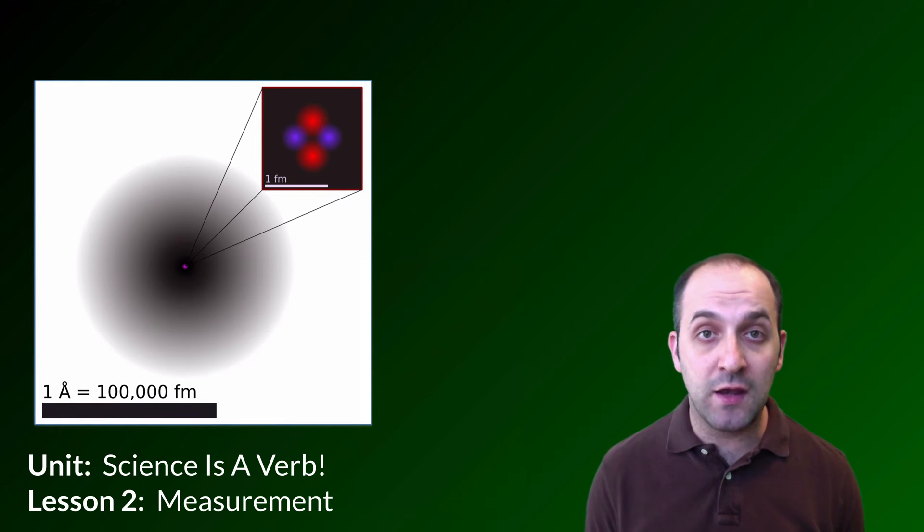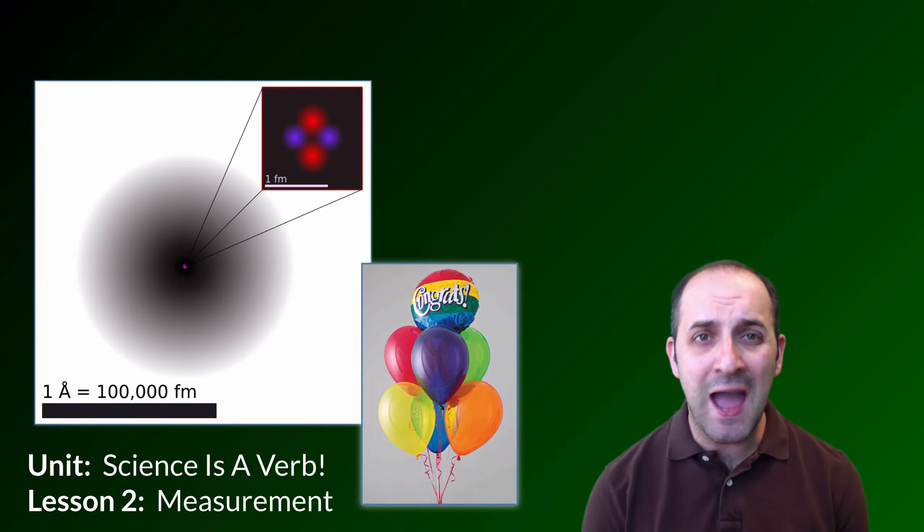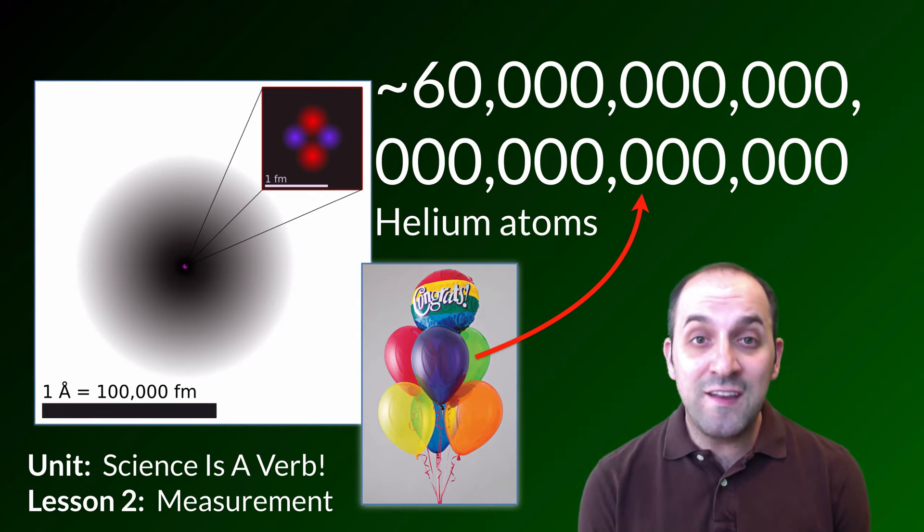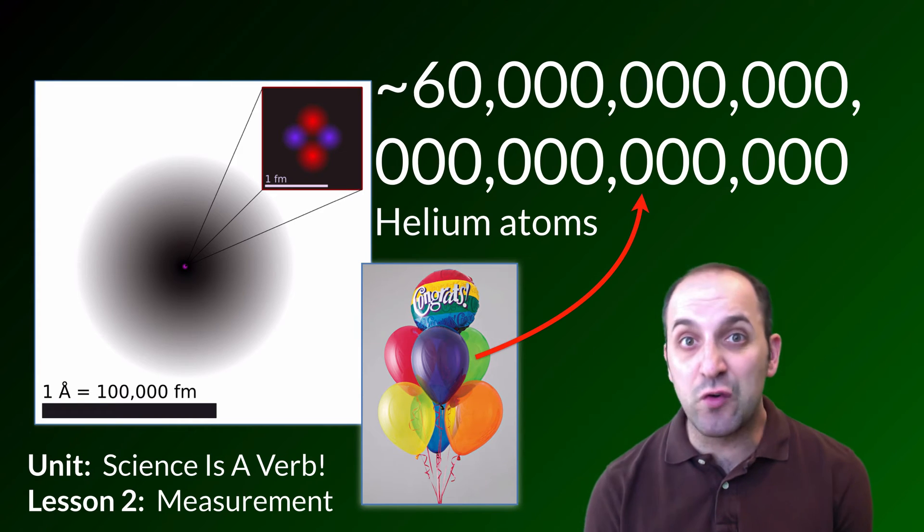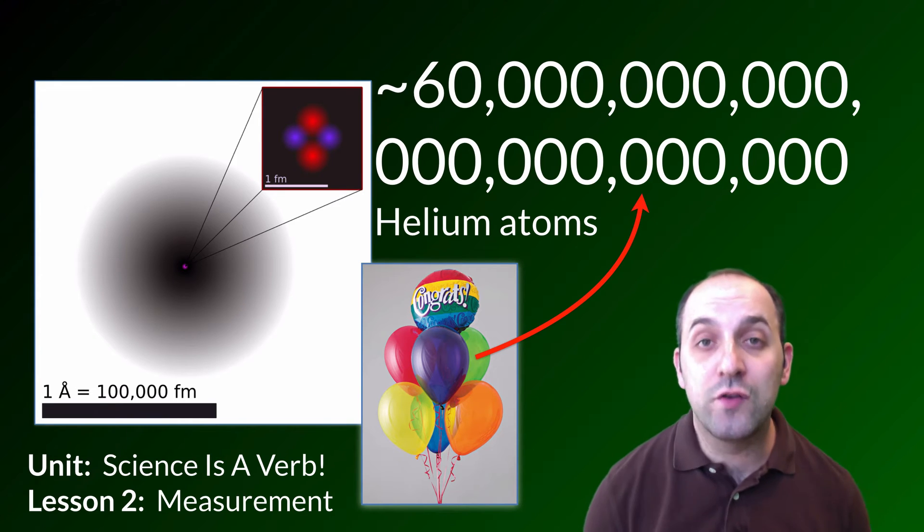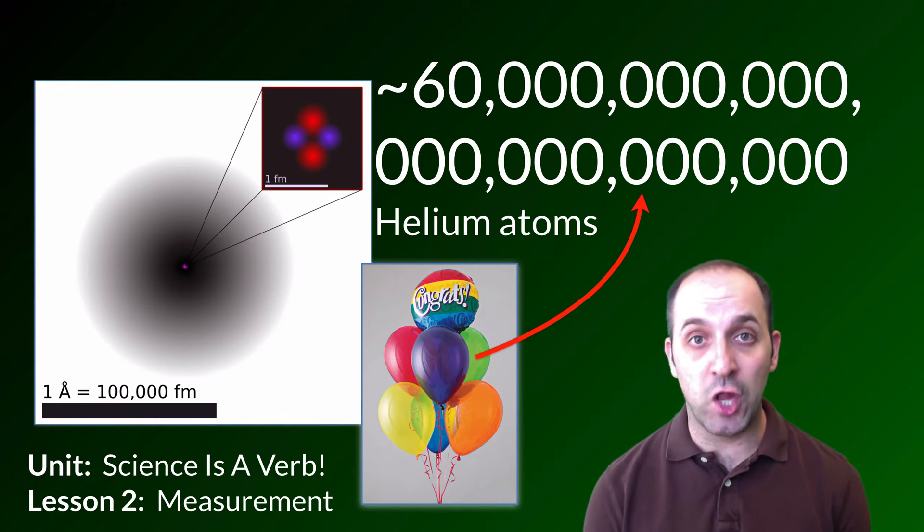So this is a model of a helium atom, and here are a bunch of balloons that are filled with helium atoms. How many atoms of helium are in these balloons? So there's this many helium atoms in the balloons, give or take a couple billion or trillion or so. About 6.0 times 10 to the 23rd helium atoms. And the point here that I want to make is that we can't just say that's a lot of helium atoms.